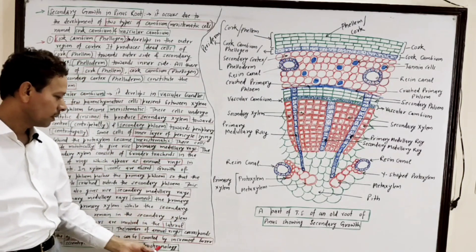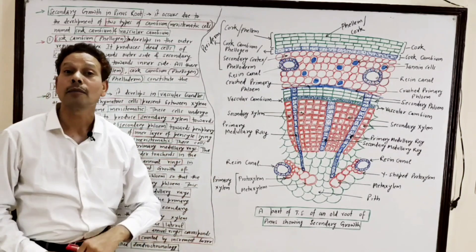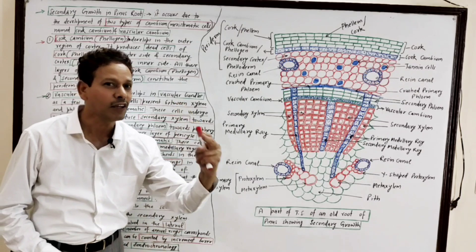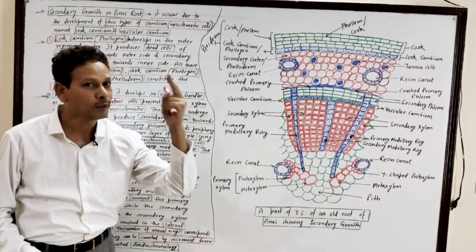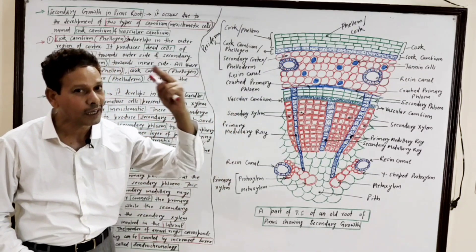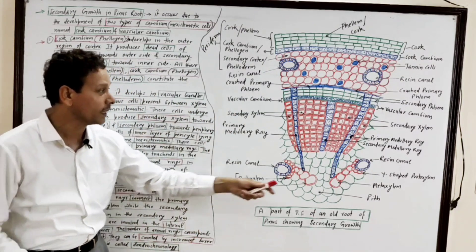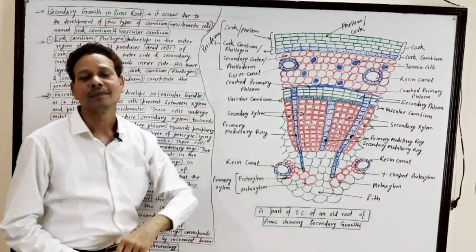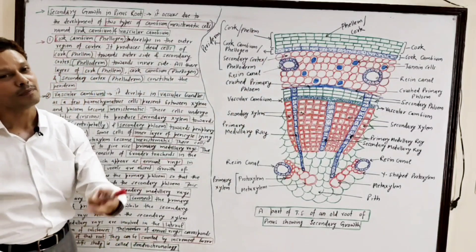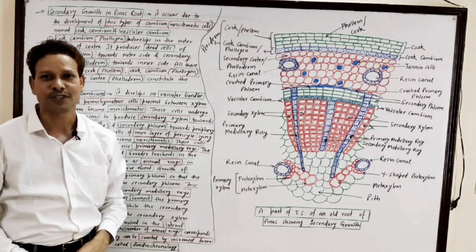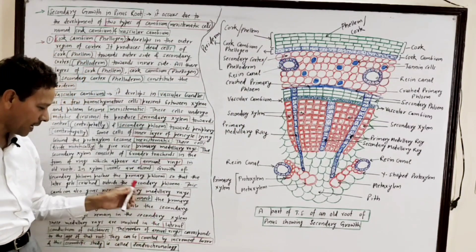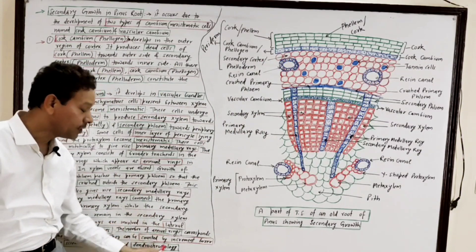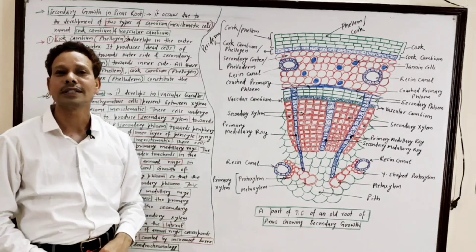These are growth rings, and these growth rings may be counted by a special type of instrument called an increment borer. The scientific study of counting and analyzing these annual rings or growth rings is called dendrochronology.